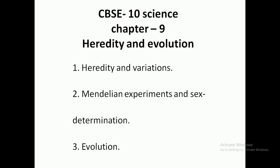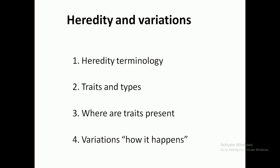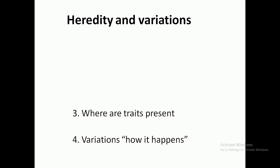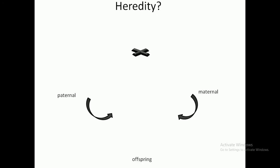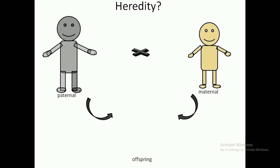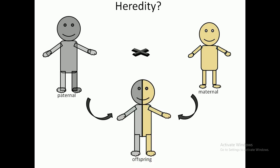In the third part I will discuss evolution. In the first part — heredity and variation — we will cover heredity terminology, traits and their types, where these traits are present, and how variation happens. Let us now understand what heredity is: it is basically the transmission of characters from parent to offspring.